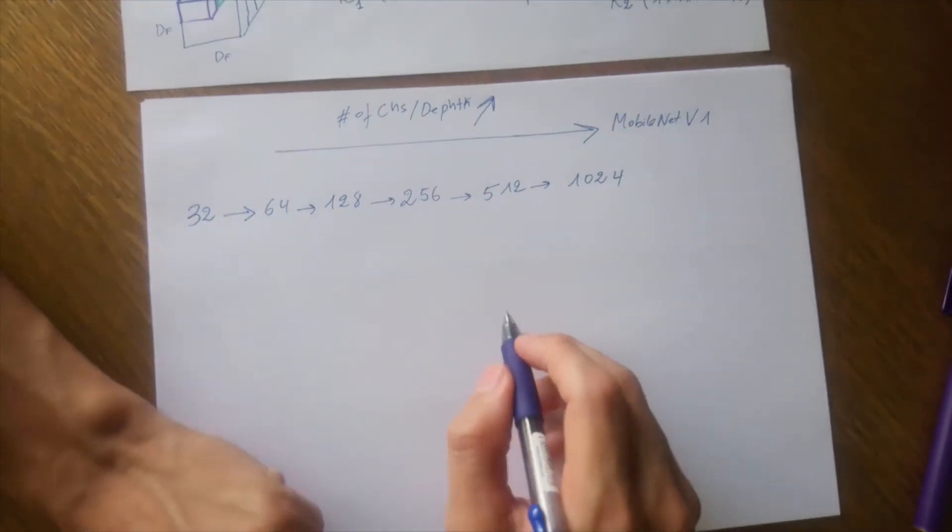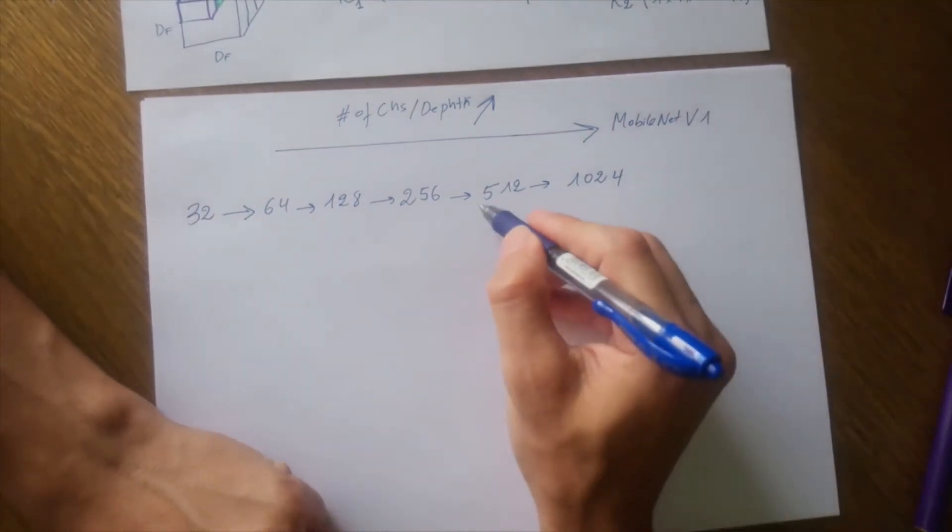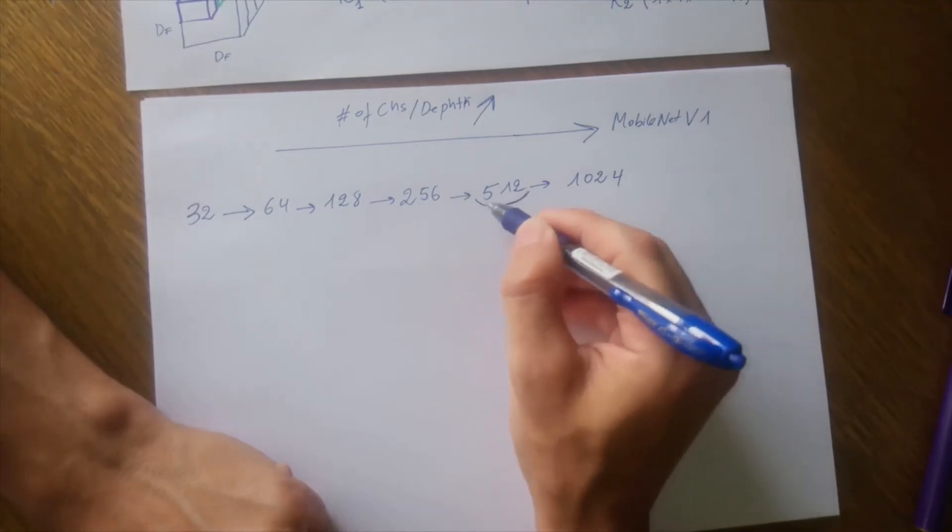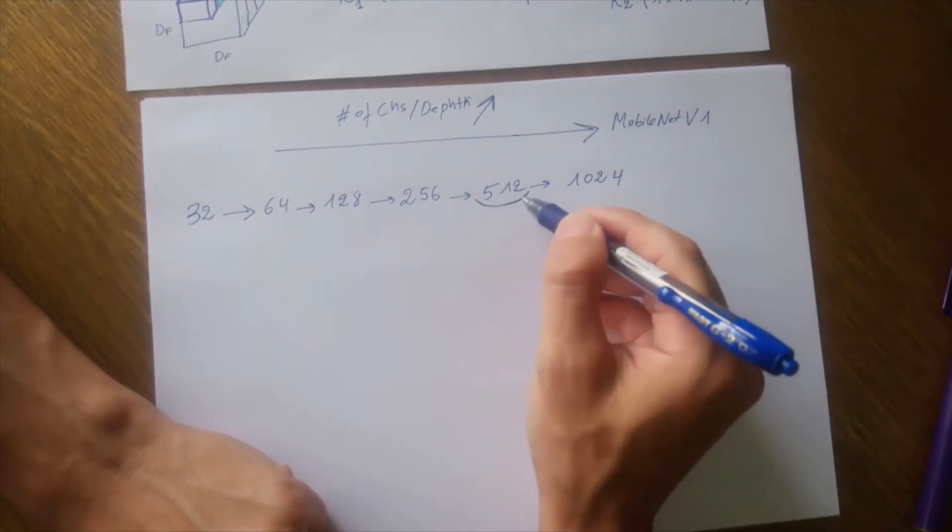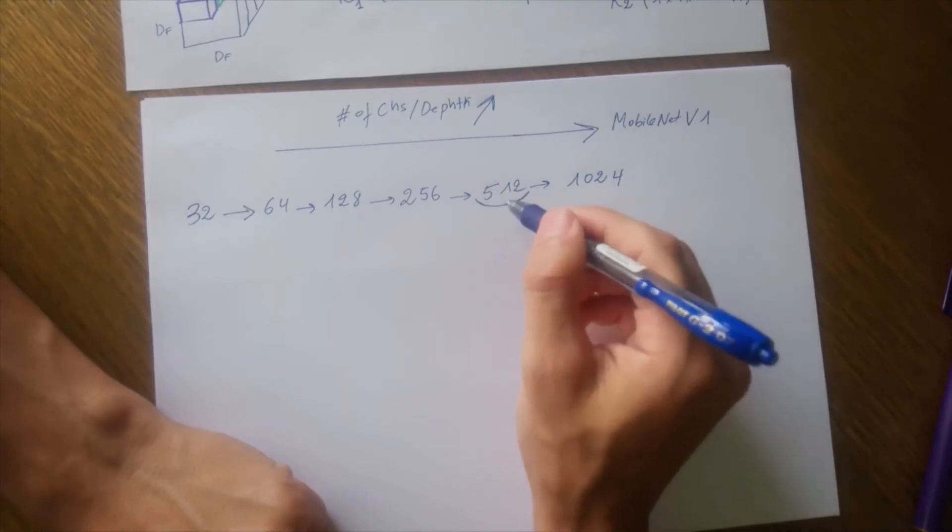So let me give you a concrete example. Let's say that we want to filter the layer, the output of this layer that gave us a number of channels equal to 512.